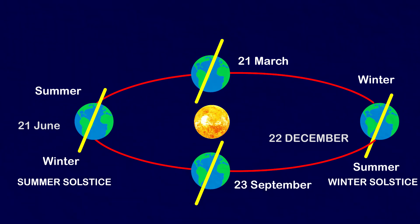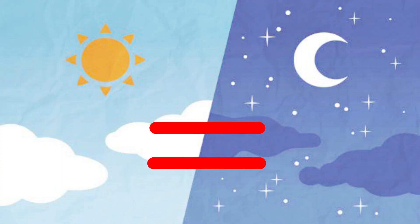On 21st March and September 23rd, direct rays of the sun fall on the equator. At this position, neither of the poles is tilted towards the sun, so the whole earth experiences equal days and equal nights. This is called an equinox.